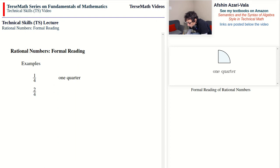If you have 2/4, then you're talking about two pieces, each of which is a quarter, and we read this as two quarters.